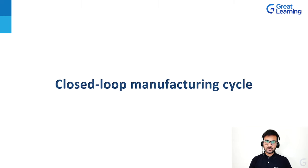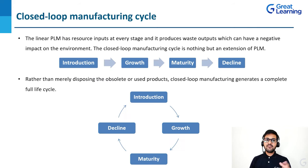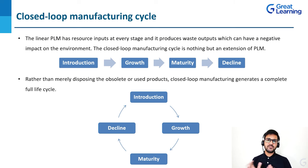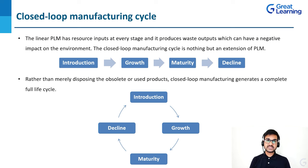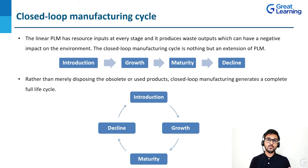Now let's talk about closed-loop manufacturing cycle. We have already discussed PLM and its four stages: introduction, growth, maturity, and decline. A product is introduced and distributed, then it starts growing with a lot of innovation, then reaches maturity where it is widely available, and then it starts declining, which is the retirement phase. These are the four main phases whenever we talk about product lifecycle management, but this is a very linear approach.